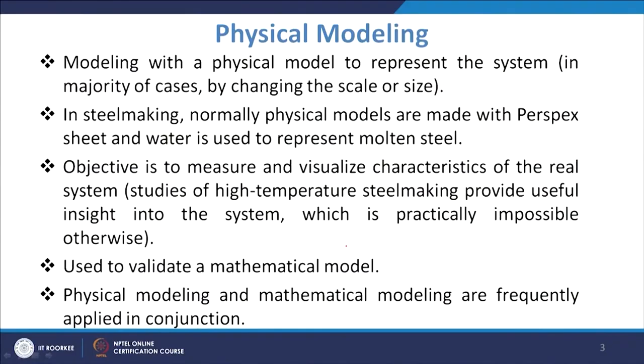When we talk about those similarities in fluid flow analysis, we can proceed with water. Water is mostly used also because it is easily available, and being transparent, when we do tracer dispersion studies we can have better visualization and see it properly. The objective is to measure and visualize characteristics of the real system. Studies of high temperature steel making provide useful insight into the system which is impossible otherwise, because you cannot have visualization on the actual system where steel is flowing — due to the very high temperature and the fact that it is not transparent.